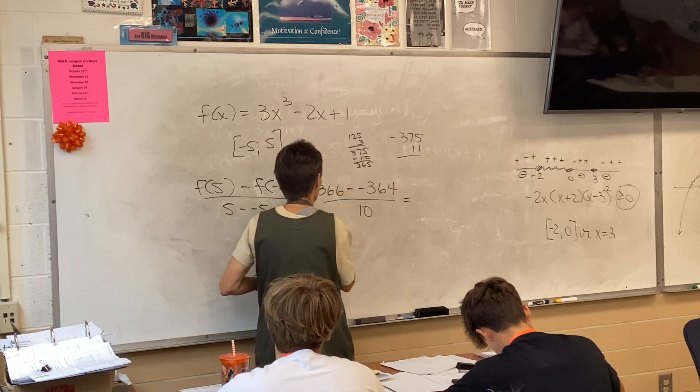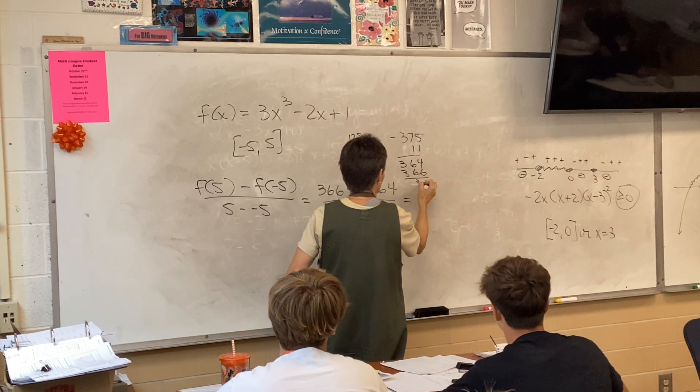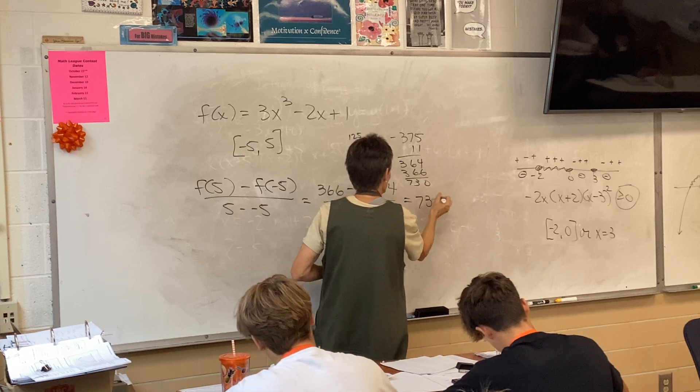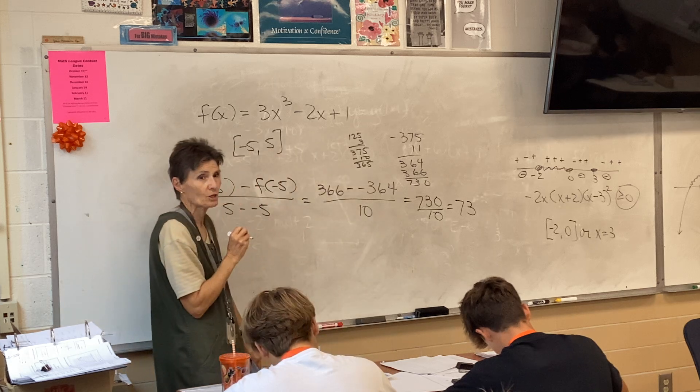So it's 366 minus negative 364. So that's going to be a total of 730 over 10. Did you get 73 then as your average rate of change?